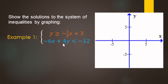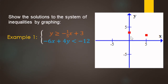For the next example, we're graphing all ordered pairs that make both inequalities true. The top inequality is in slope-intercept form. Start at the y-intercept of three, then the slope is down one and right five. It's 'or equal to' so it gets a solid boundary line, and it's greater than so we shade above the boundary line.